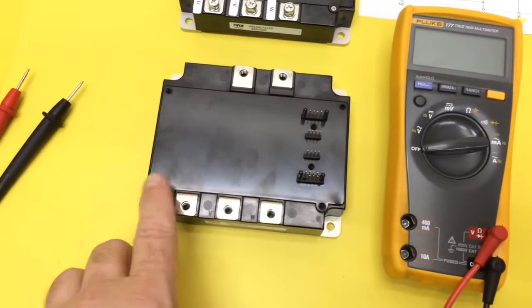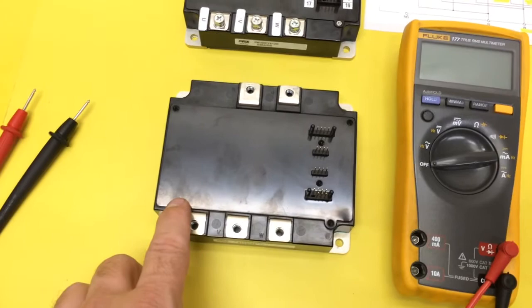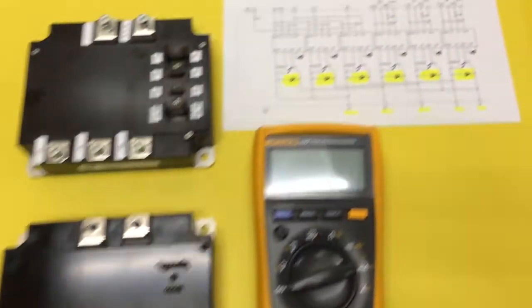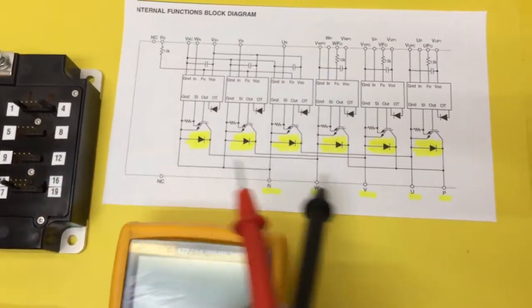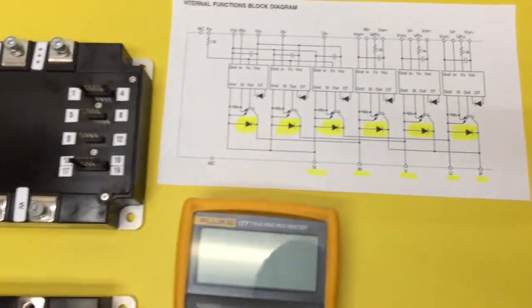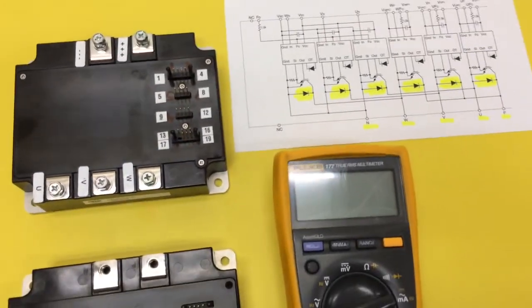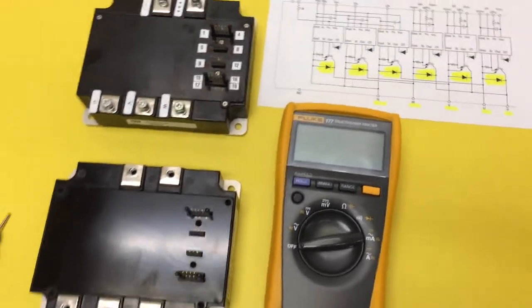Today we're going to take a look at a six pack IPM-IGBT and we're going to do a quick test of the six freewheel diodes in here. To do this test you won't need a schematic. We're going to show you how to just look for the odd one out.